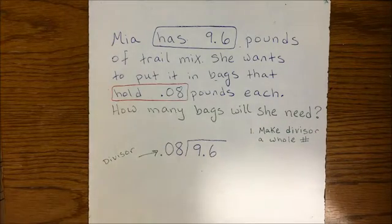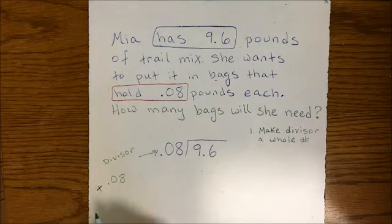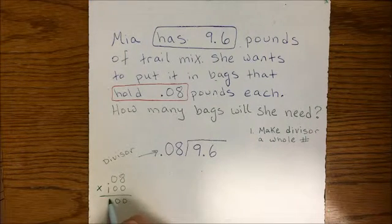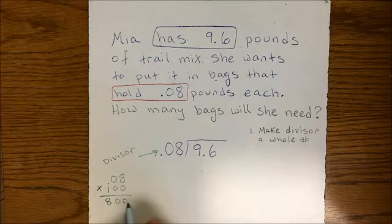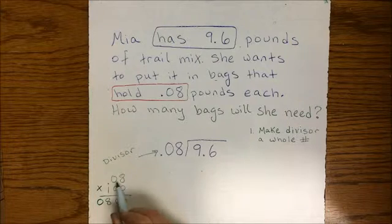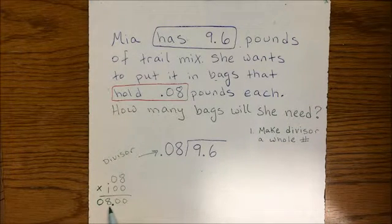The divisor is the number on the outside and one way to do that is we multiply it by 10 or 100 in order to get the decimal to be on the right side of our last number to make it a whole number.